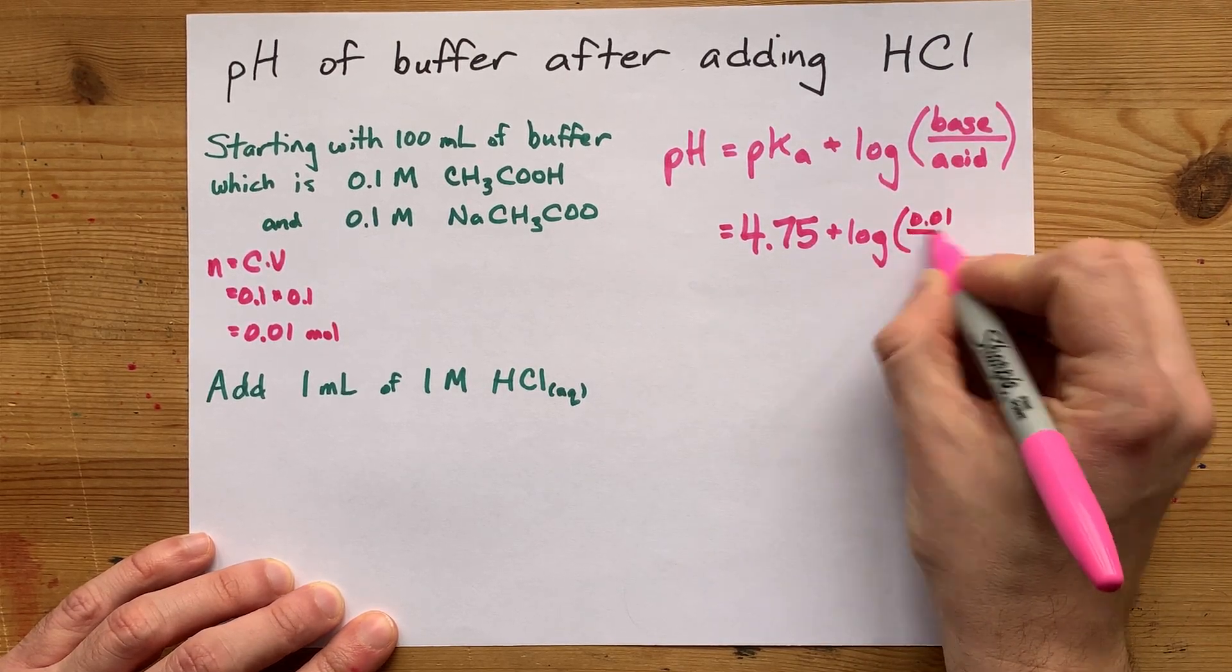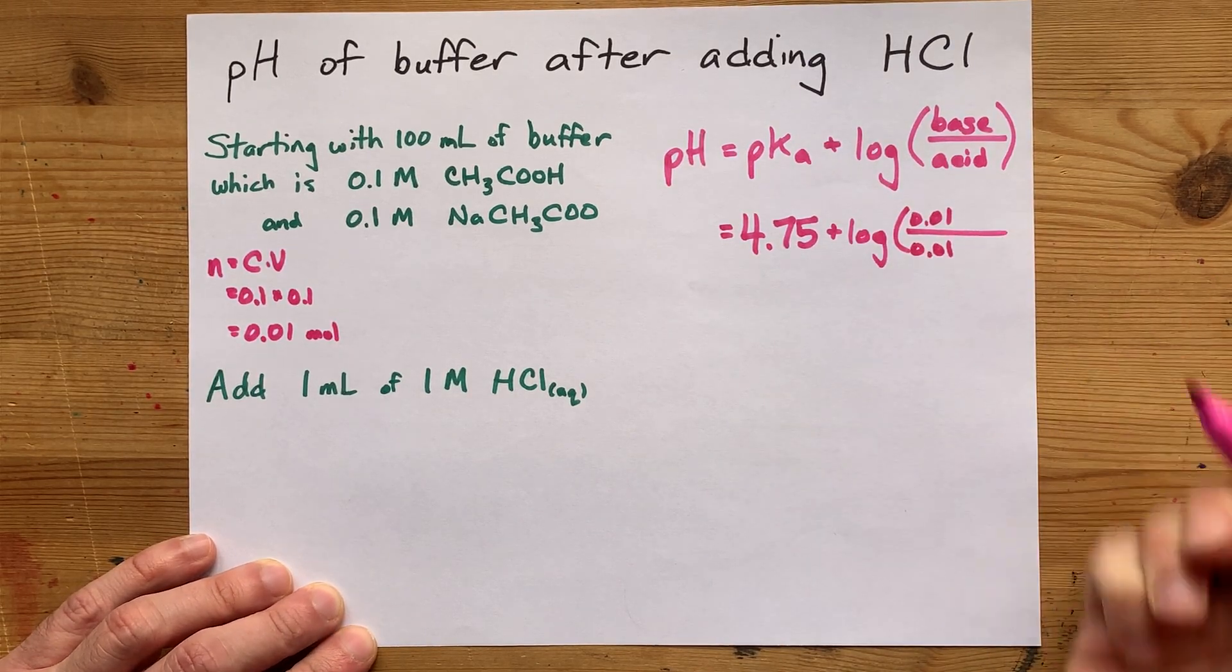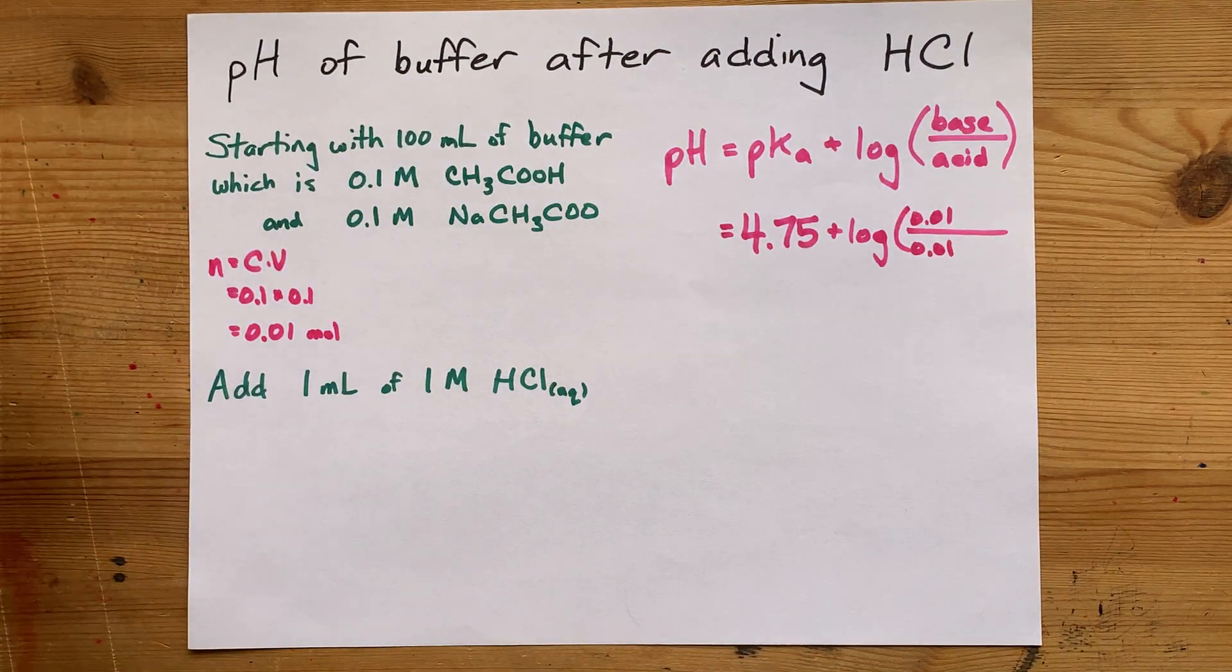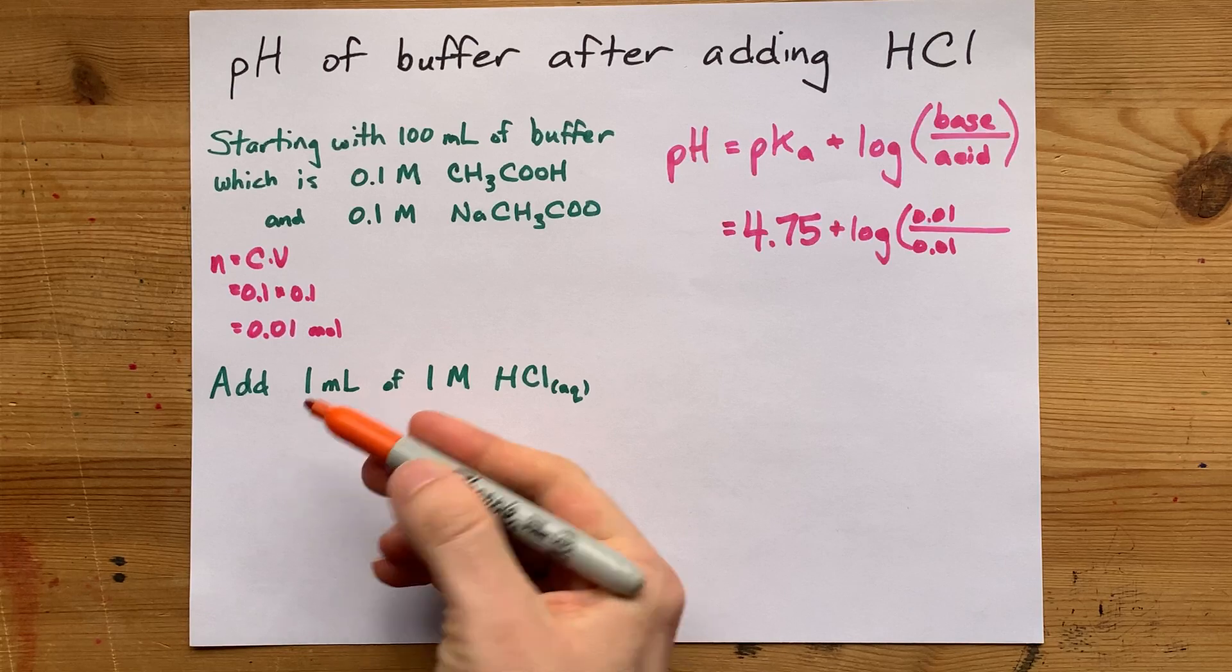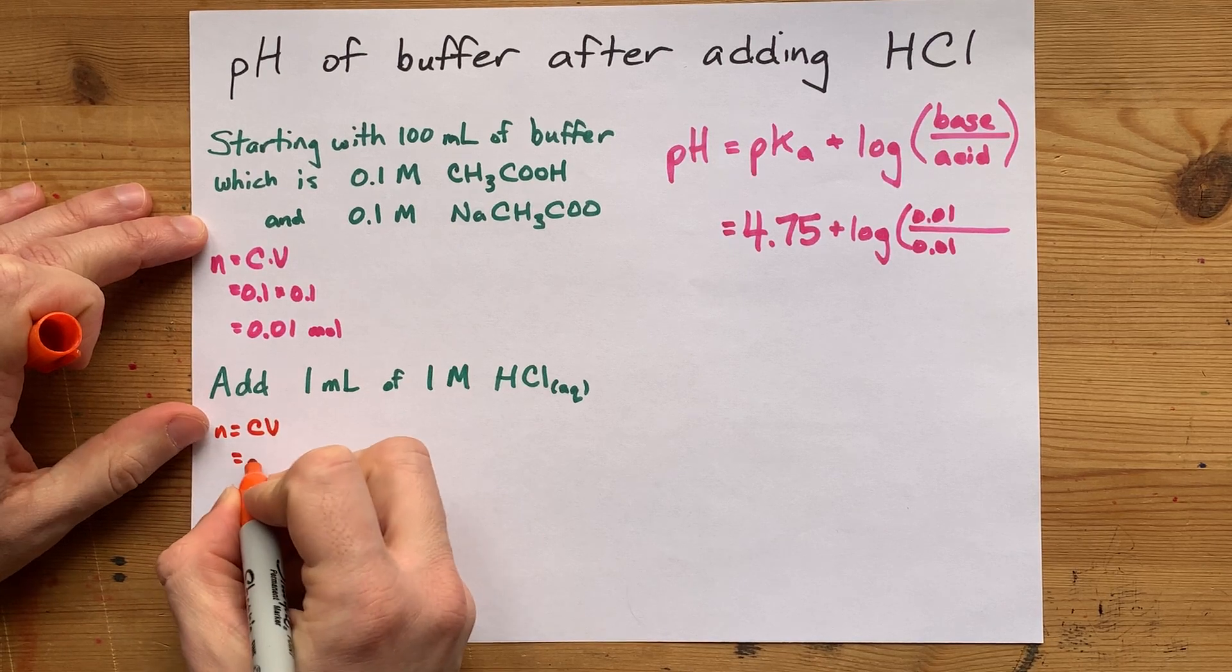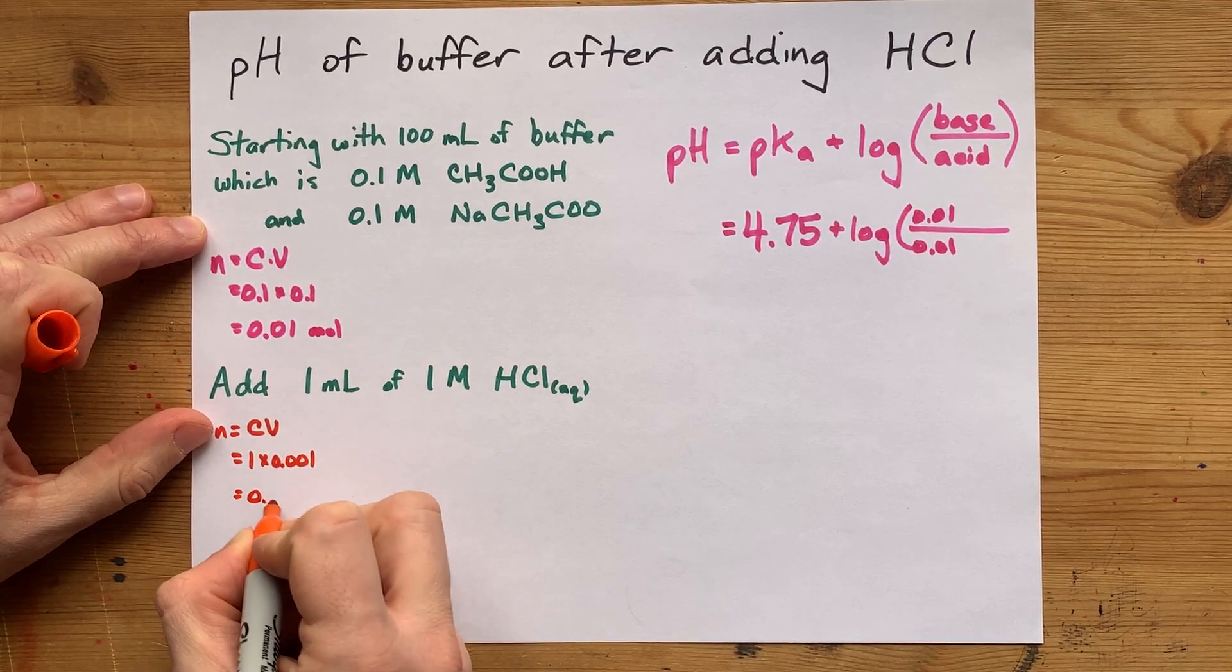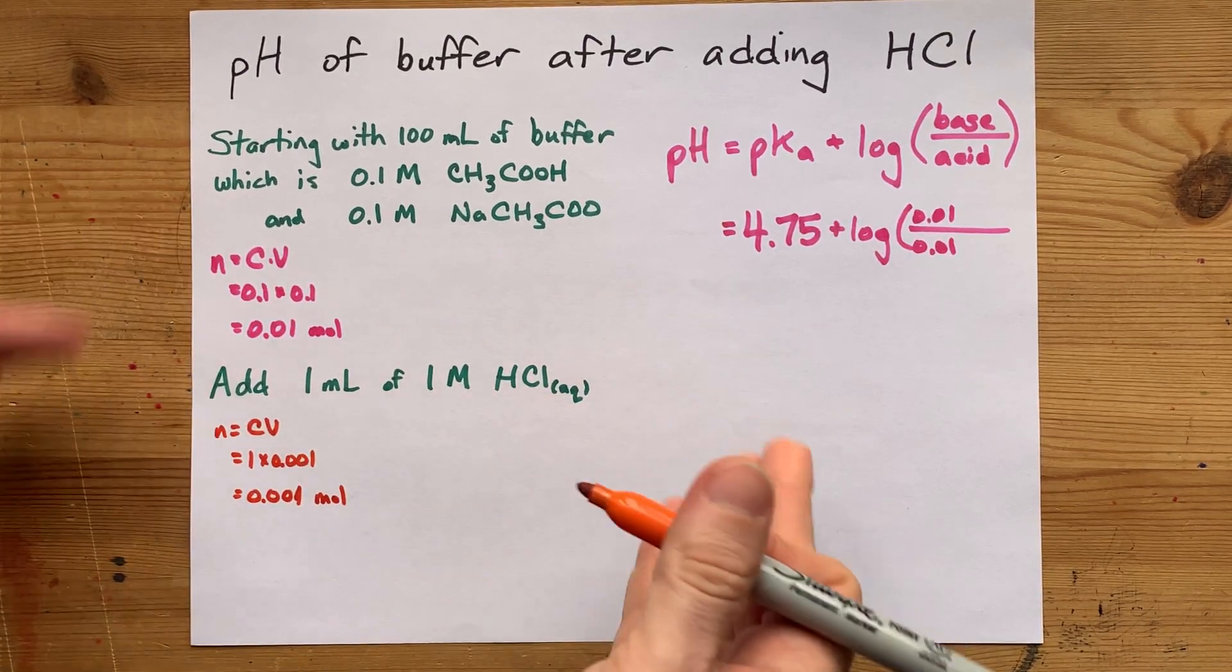0.01, 0.01. Now that's number of moles, remember. Now here comes the change that we're about to make when we add HCl. We're going to add, in this case, one milliliter of one molar HCl. The number of moles that that represents is one times 0.001. It's 0.001 moles of the acid that we're adding.